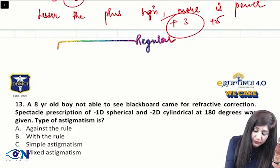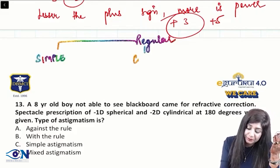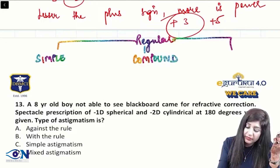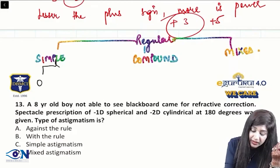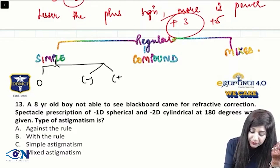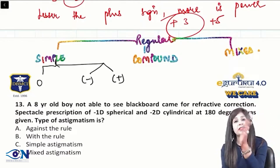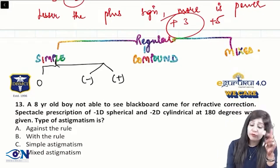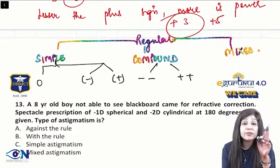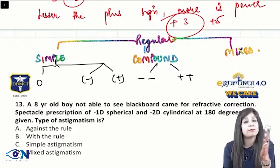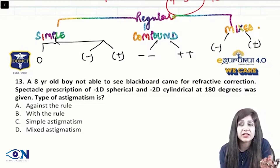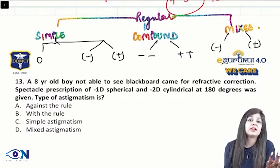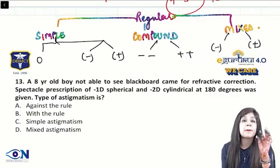Regular astigmatism can be differentiated into simple astigmatism, compound astigmatism, and mixed astigmatism. Simple astigmatism: one side has zero power, the other side has either minus or plus power. Zero with minus is simple myopic; zero with plus is simple hypermetropic astigmatism. If both sides are minus or both plus with different powers, it is compound myopic or compound hypermetropic. If one side is minus and the other is plus — myopic in one meridian, hypermetropic in another — it is mixed astigmatism.